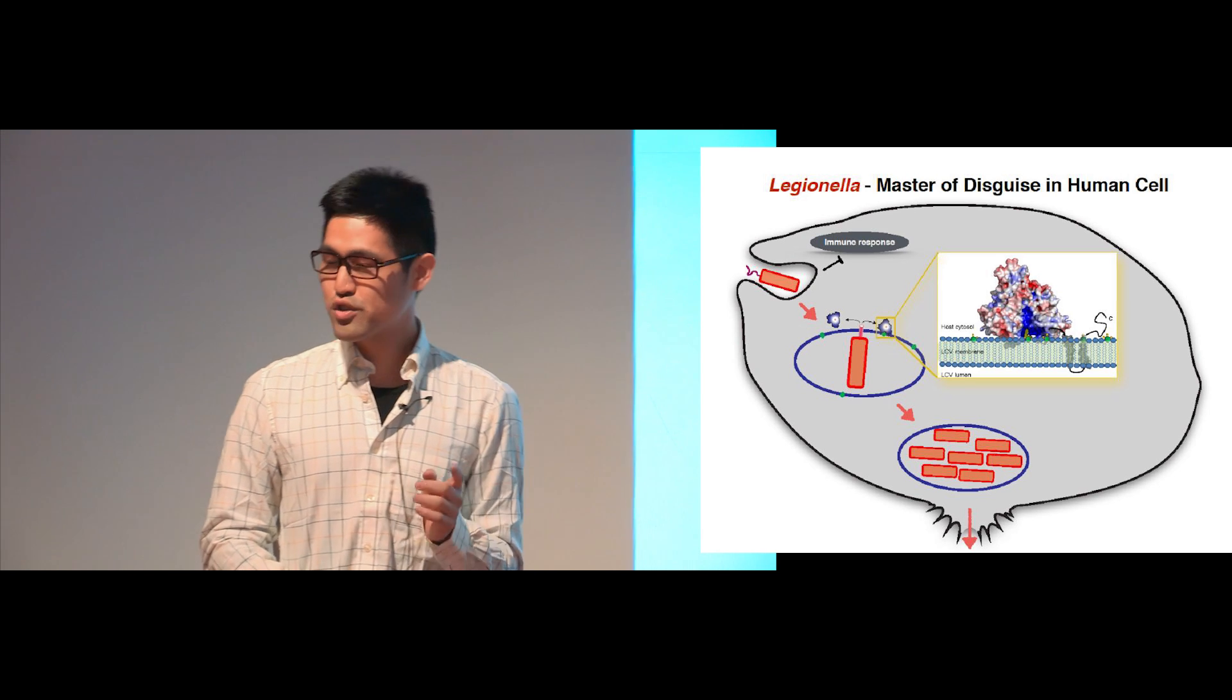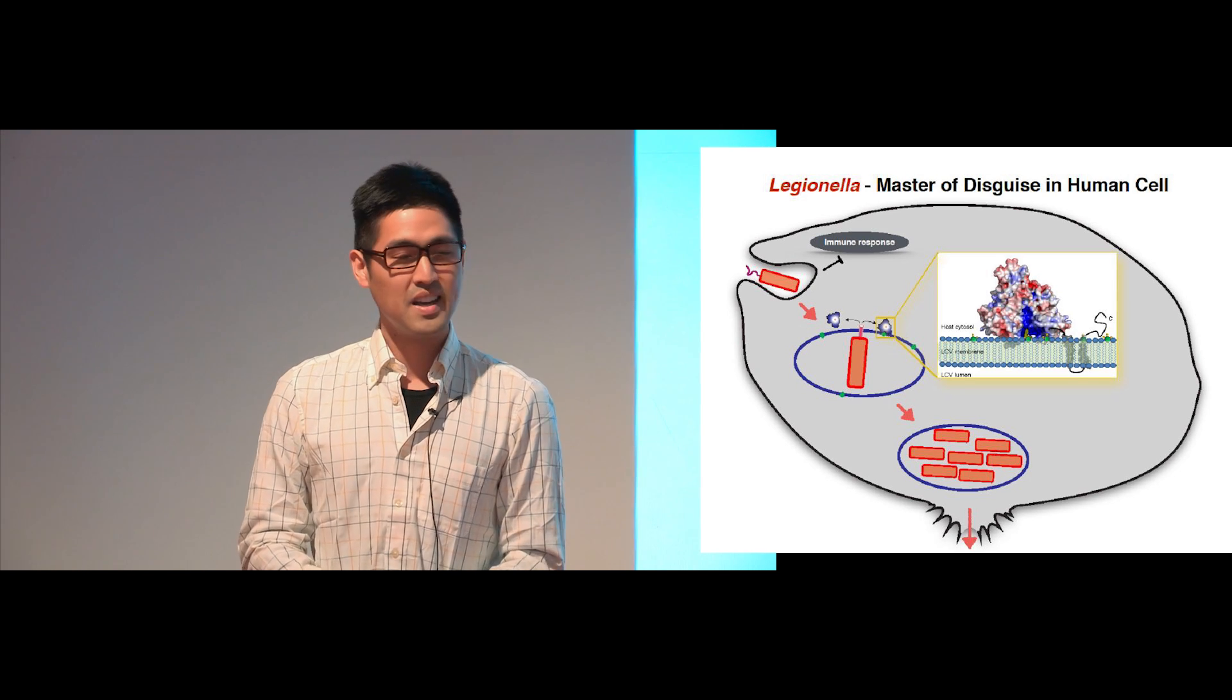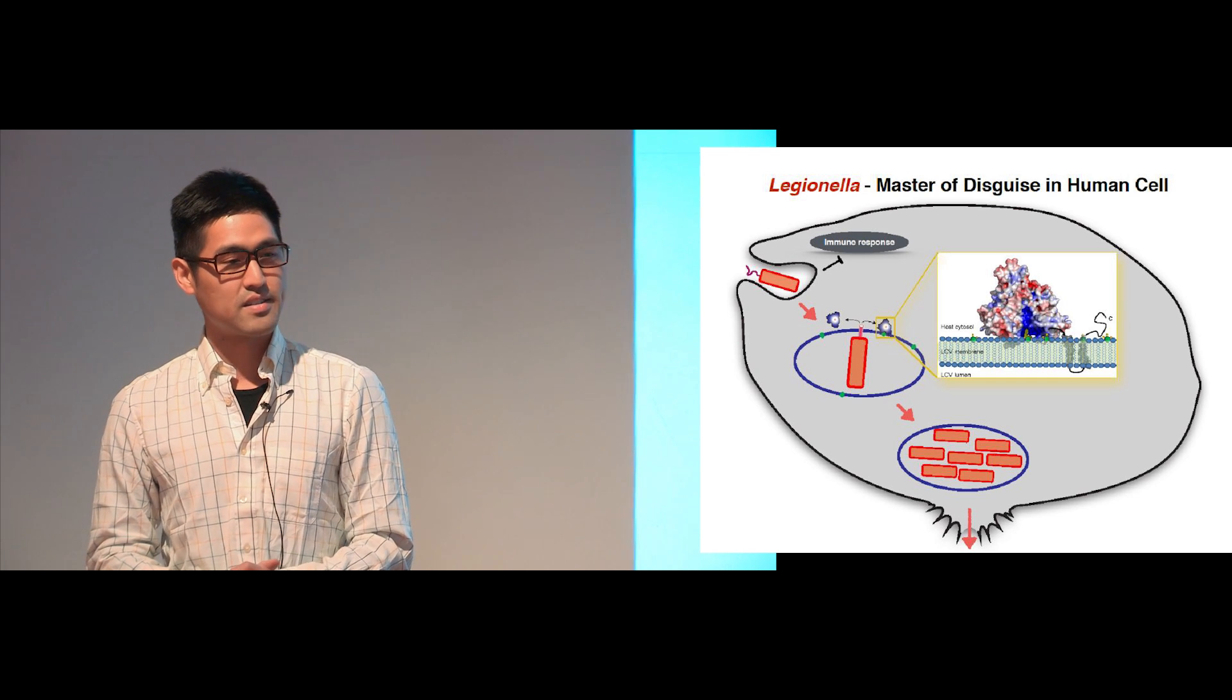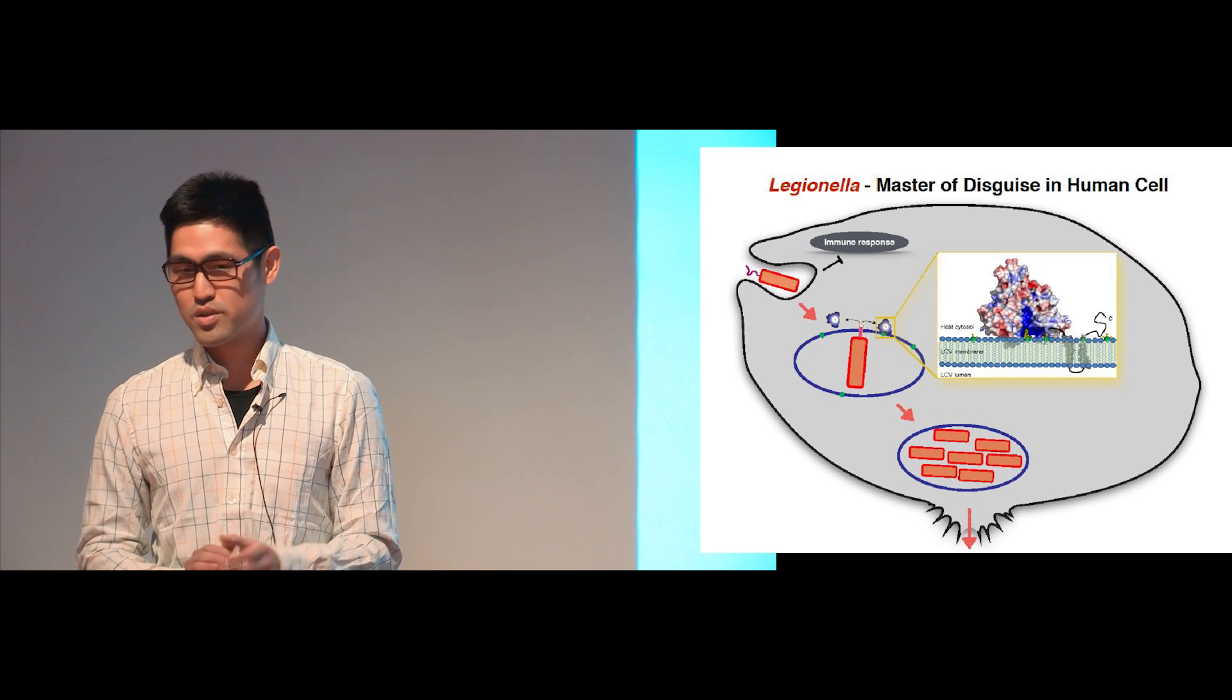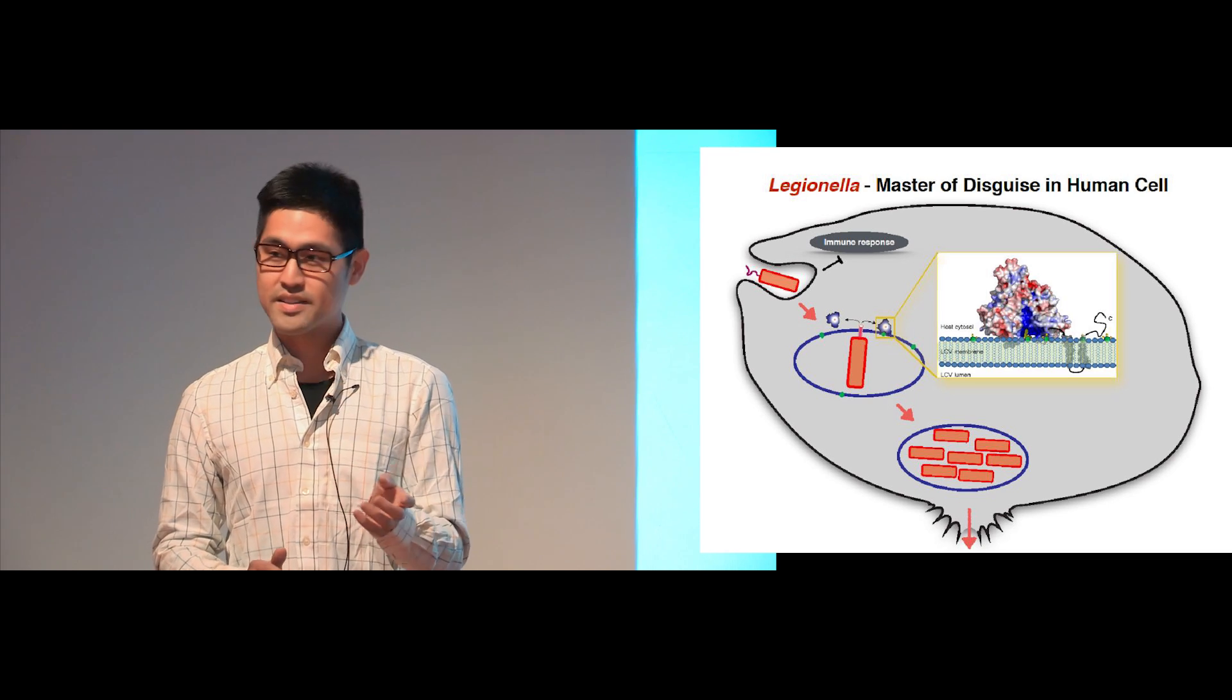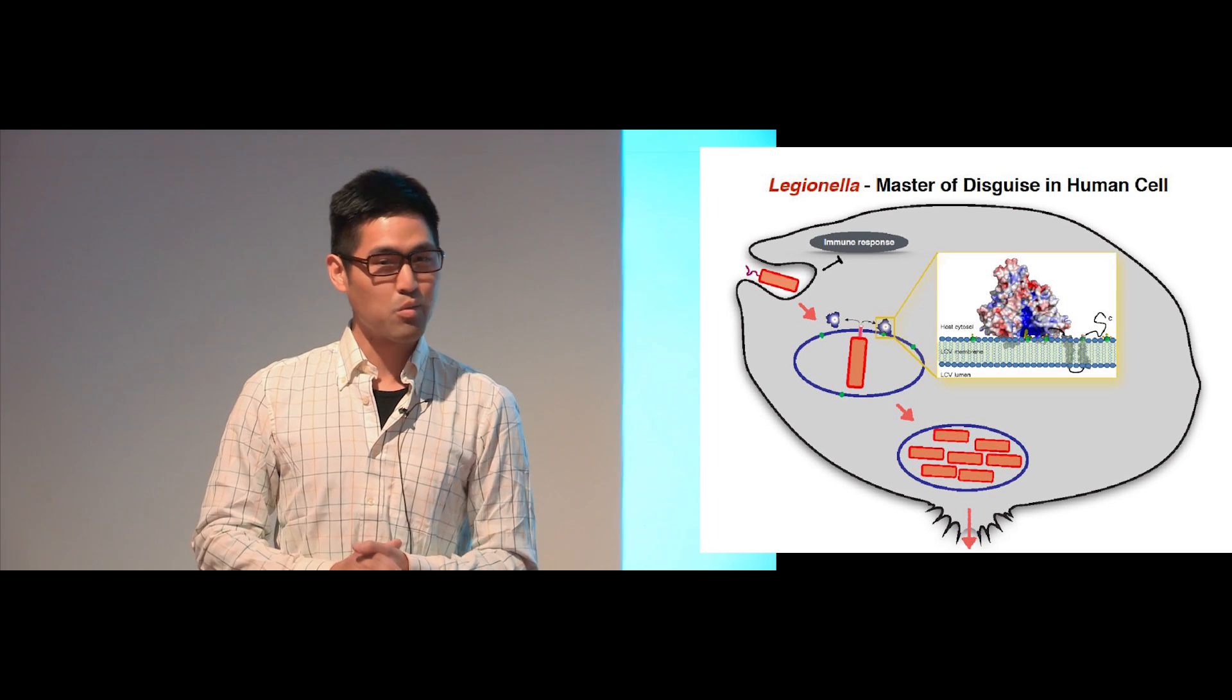In 1976, at the convention for American Legion in Philadelphia, a mysterious outbreak of severe pneumonia caused 29 deaths. The source of the outbreak came from small contaminated drops of water through the air conditioning system and its subsequent inhalation, much like the air we're breathing now.